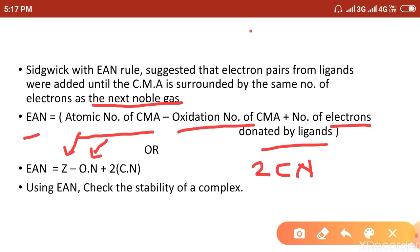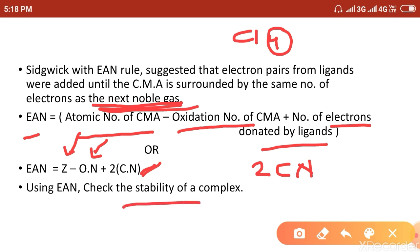For example, if four Cl ligands are attached, four ligands donate a total of eight electrons. You can use either the total electrons donated by ligands, or write 2 × coordination number (2 × 4 = 8). Using the effective atomic number, we can check the stability of a complex — if it matches the next noble gas configuration, that complex will be more stable.